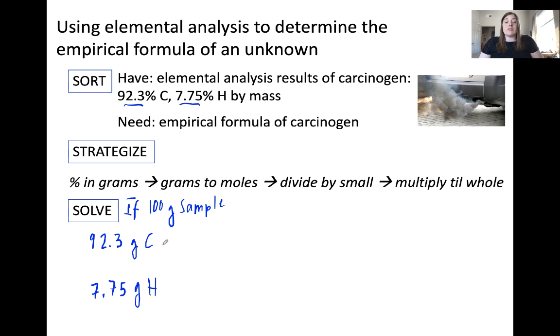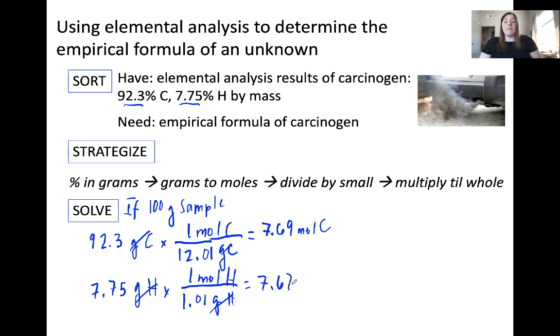The next step is grams to moles. We need to convert them to moles using the molar mass of each element: 12.01 grams per one mole of carbon and 1.01 grams per one mole of hydrogen. Grams of carbon cancels with grams, grams of hydrogen cancels with grams. When I did this, I got 7.69 moles of carbon. And in the bottom, I got 7.67 moles of hydrogen.